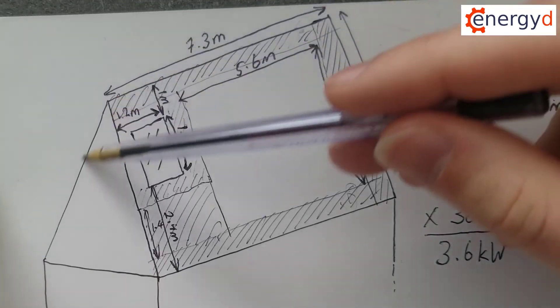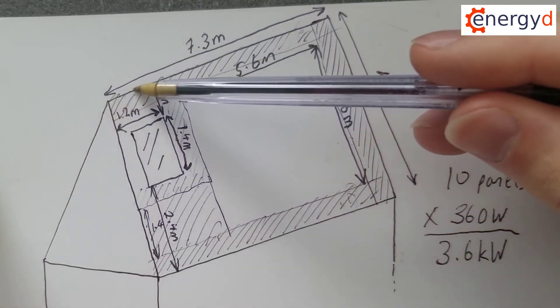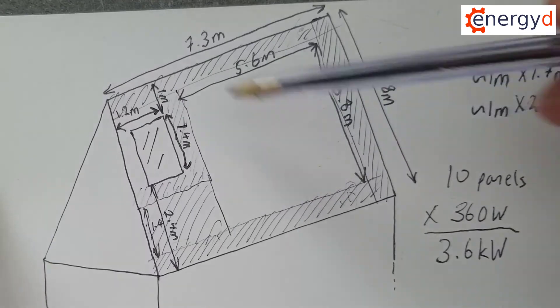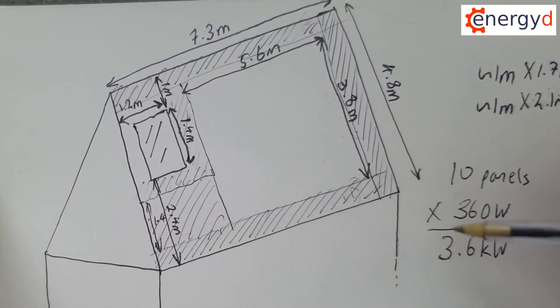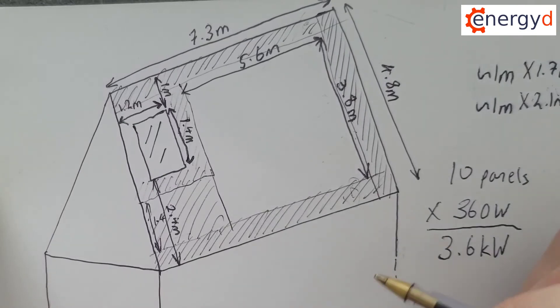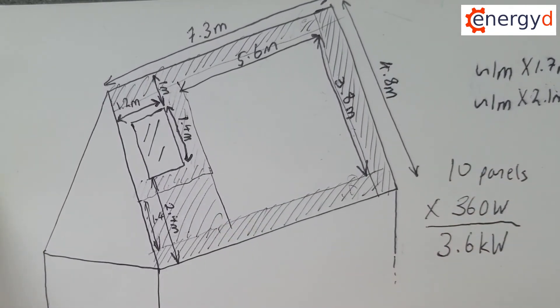Now, if on the rear of this roof there happened to be equivalent space, and if it was east-west, then this house would be absolutely perfect to get just over six kilowatts. But still, 3.6 is certainly better than nothing as well.